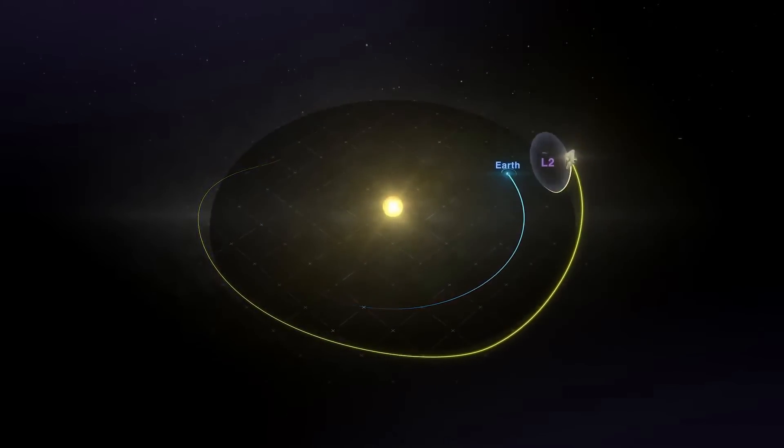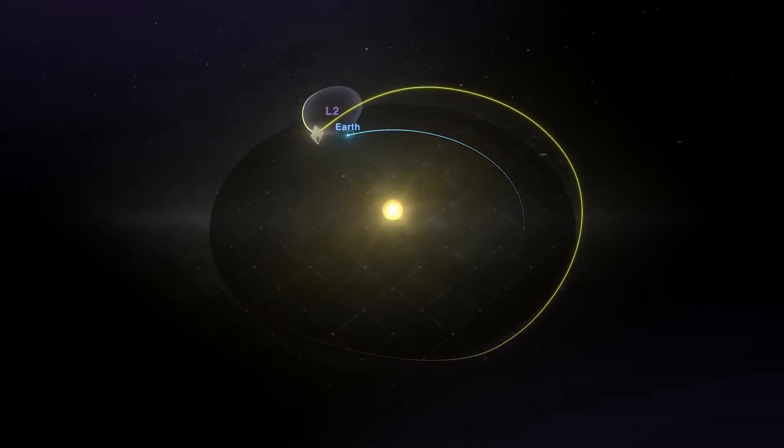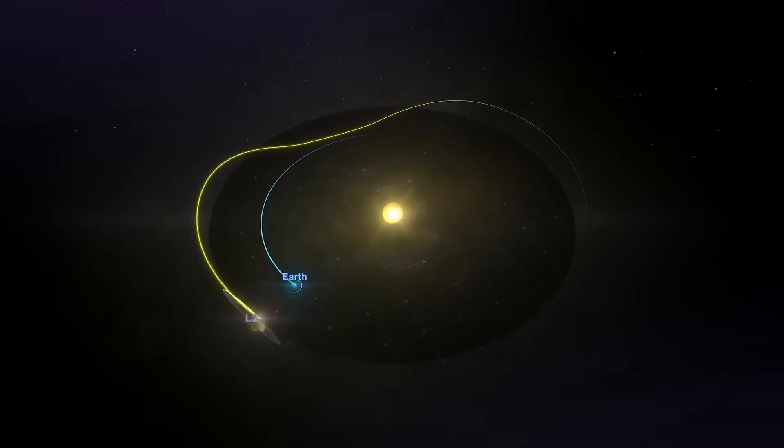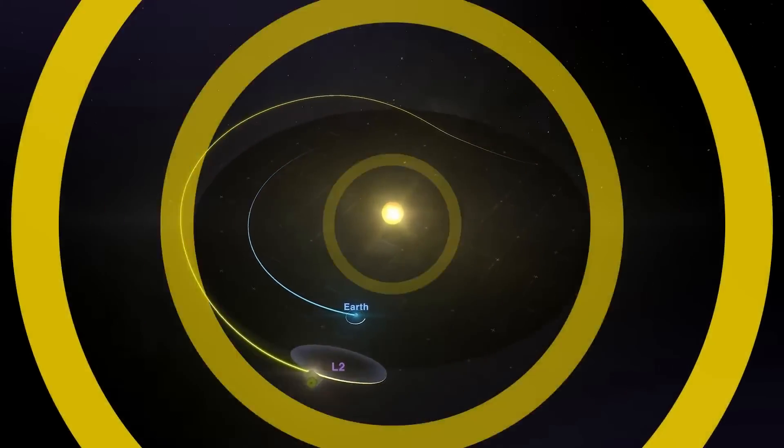In space, where Webb will be, Earth's atmosphere and warm radiating surface are out of the way for an unobstructed view of the night sky.